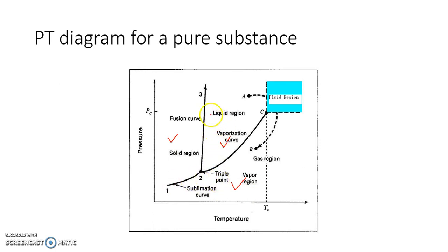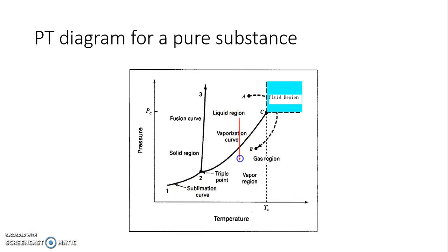This is the vapor region, this is the liquid region, and this is the solid region. As the temperature is lower, we have solid; at high temperature and lower pressure, we have vapor; at higher temperature and high pressure, we have the liquid region. If I want to switch over from one phase to another — say from point 1 to point 2 — I have to keep on decreasing the pressure at a given temperature, going through subcooled liquid, saturated liquid, then saturated vapor, and superheated vapor. This is how the phase conversion occurs.